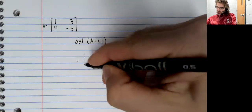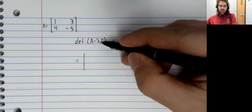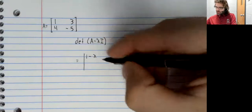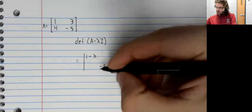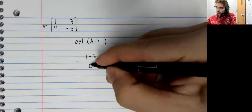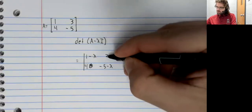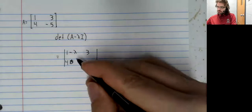Now, what this minus lambda I does is put negative lambdas on the diagonal. The rest of the matrix is left alone.